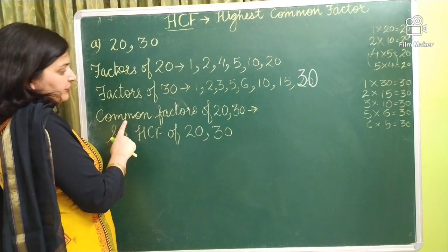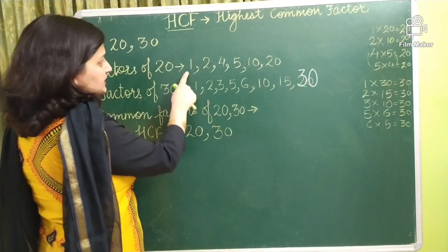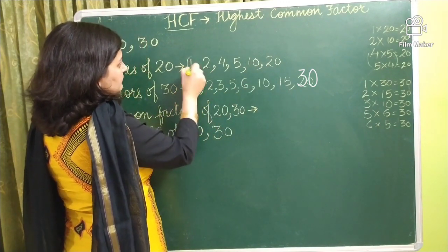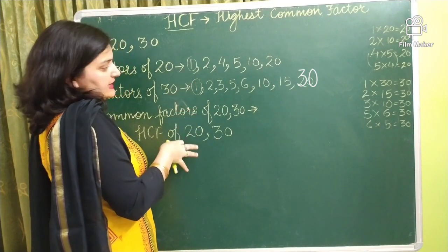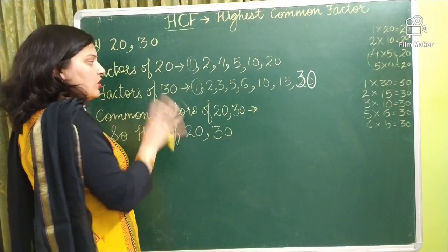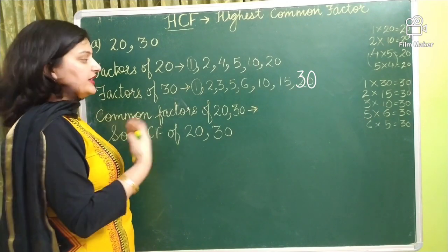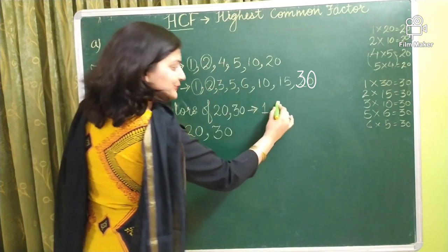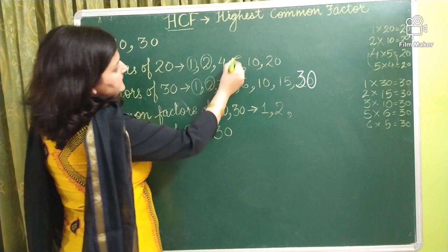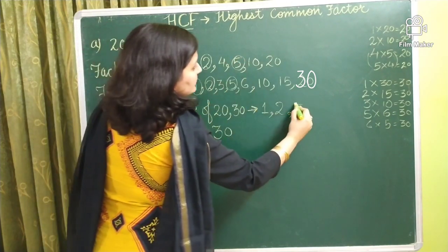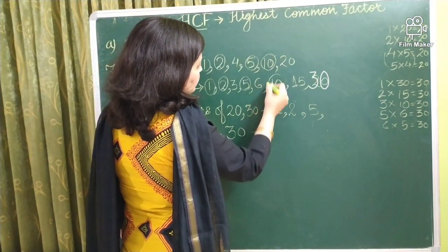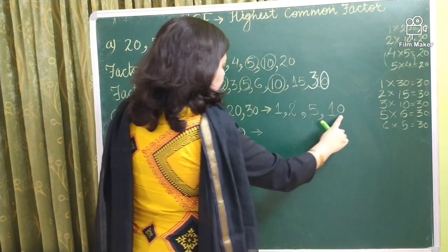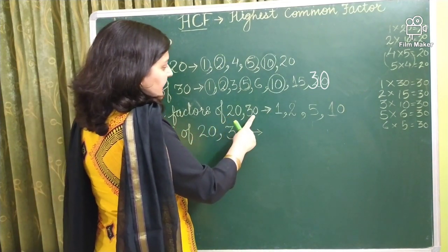Now we have to find the common factors of 20 and 30. So between these factors we have to find the common factor. So first common factor 1. So by solving this question we can say that 1 is always a common factor for every number. So 1, then 2. After that the next number is 5. And next 10. So all these numbers are the common factors of 20 and 30.